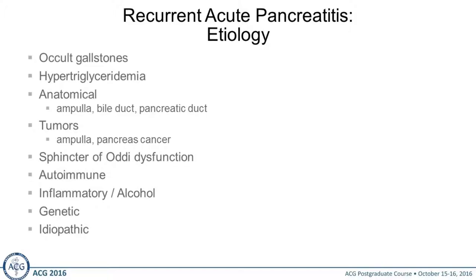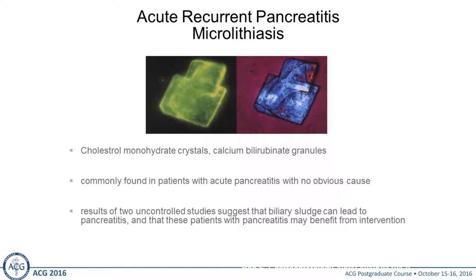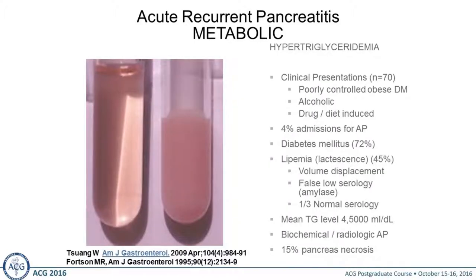Here are the big ones: occult gallstones — sometimes called microlithiasis or biliary sludge. These are cholesterol monohydrate or calcium bilirubinate crystals. The most common are cholesterol monohydrate crystals; patients with sickle cell anemia are more likely to get the calcium bilirubinate stones. If you see this in a person who has recurrent pancreatitis, take out the gallbladder. This is the most common cause for recurrent pancreatitis in the referred patients we see.